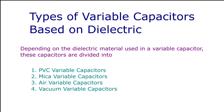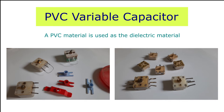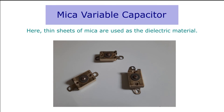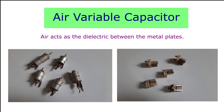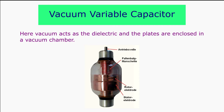Depending on the dielectric material used, variable capacitors are divided into: PVC variable capacitors, mica variable capacitors, air variable capacitors, and vacuum variable capacitors. In PVC variable capacitors, a PVC material is used as the dielectric. In mica variable capacitors, thin mica sheets are used as the dielectric. In air variable capacitors, air acts as the dielectric, whereas in vacuum variable capacitors, vacuum forms the dielectric layer.